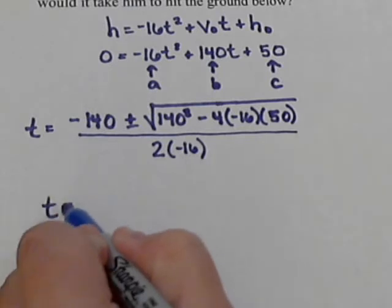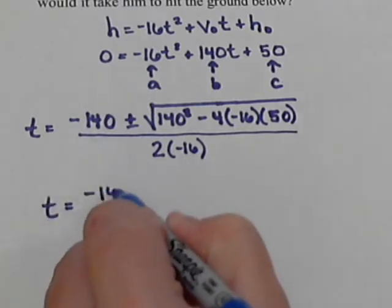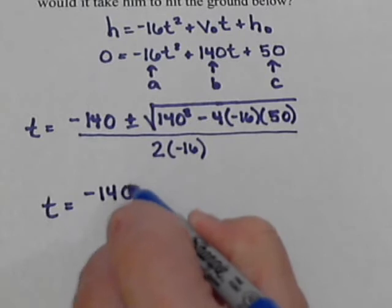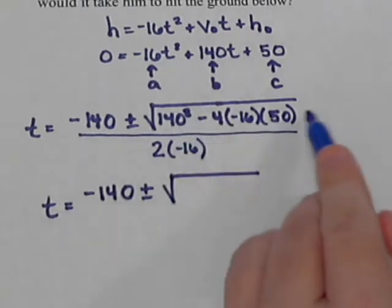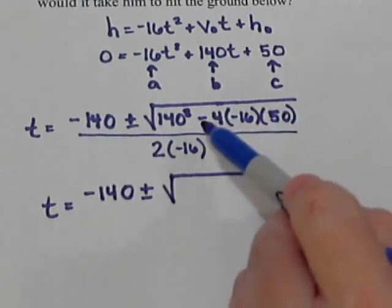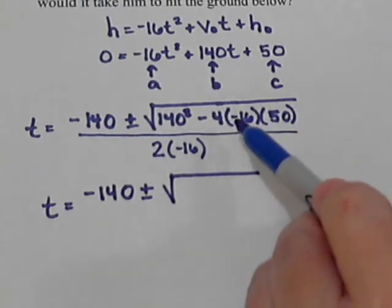The next step is we're going to simplify what we can. We're going to leave the negative 140 out front, plus or minus. Now we're going to calculate all this in parentheses. Be careful that you use the minus with the 4 and the negative with the 16.